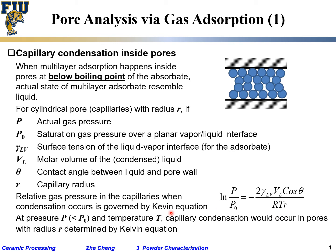At any pressure p smaller than the equilibrium saturation pressure, at a given temperature T, capillary condensation occurs in pores with radius r determined by the Kelvin equation. When the pore size r is very small, the right-hand side becomes very large in magnitude and negative, meaning p has to be very low compared to p0 — as we approach vacuum, the smaller pores will be filled.